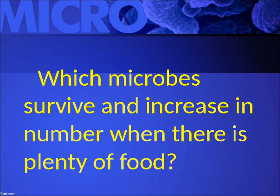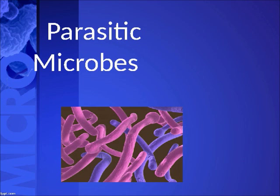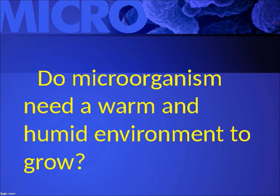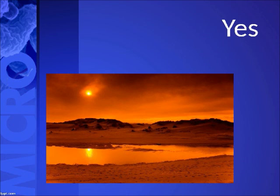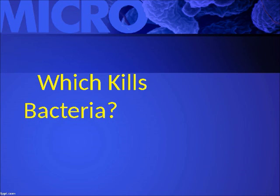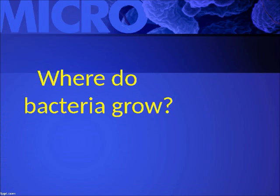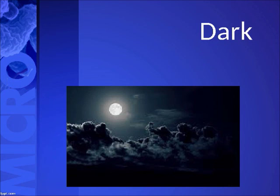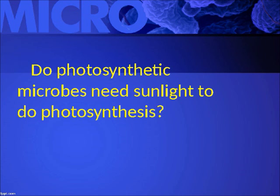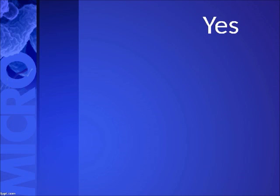Which microbes survive and increase in number when there is plenty of food? Parasitic microbes. Do micro-organisms need a warm and humid environment to grow? Yes. What kills bacteria? Direct sunlight. Where do bacteria grow? In the dark. Do photosynthetic microbes need sunlight to do photosynthesis? Yes.